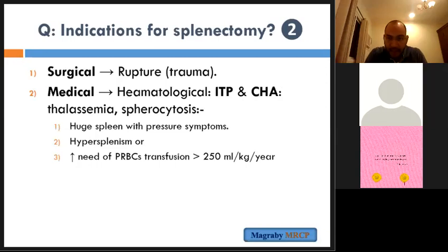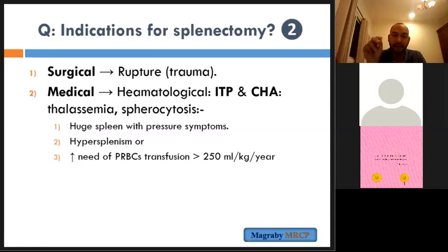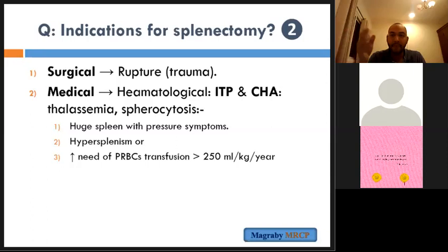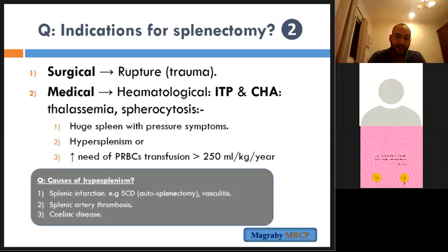There are causes of hyposplenism without surgery — auto-splenectomy. Three causes: splenic infarction from sickle cell disease (repeated infarctions leading to splenic atrophy — called auto-splenectomy), splenic artery thrombosis, and coeliac disease.